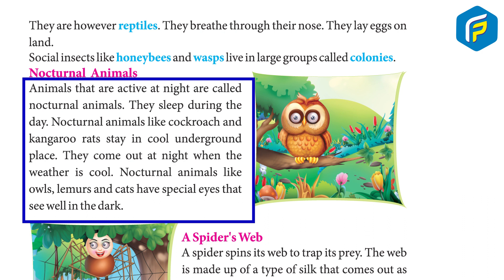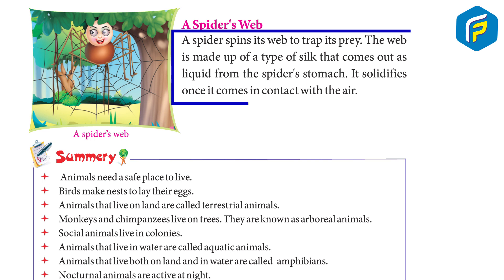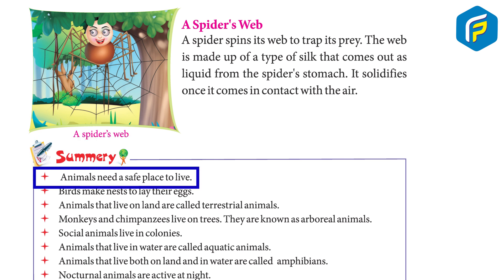A spider spins its web to trap its prey. The web is made up of a type of silk that comes out as liquid from the spider's body.